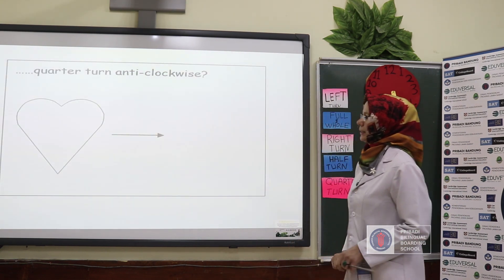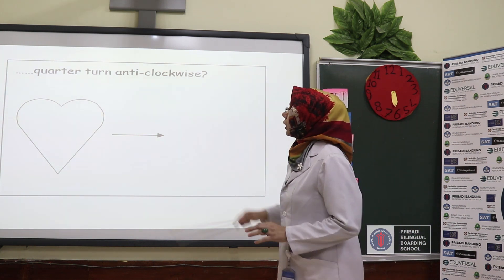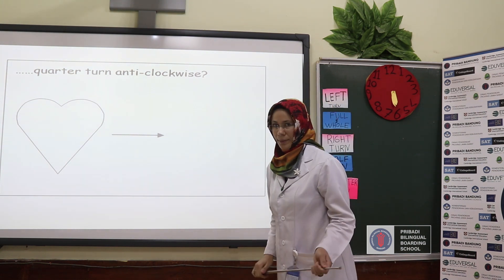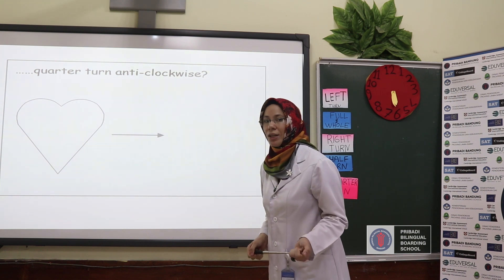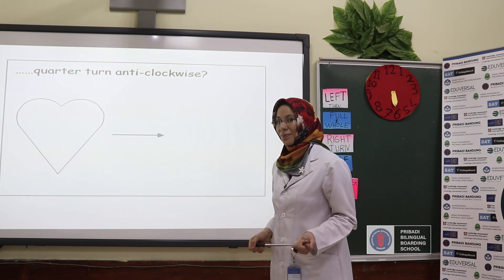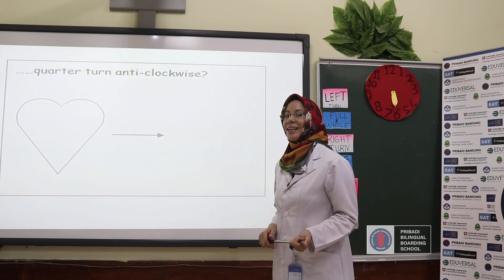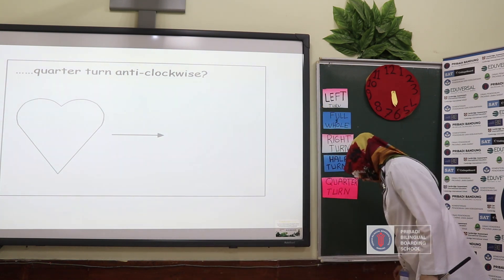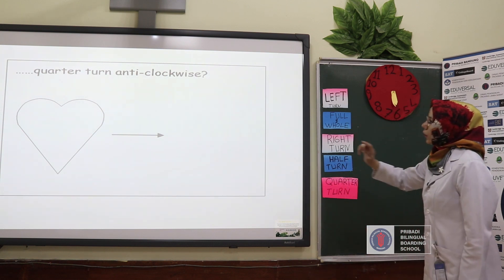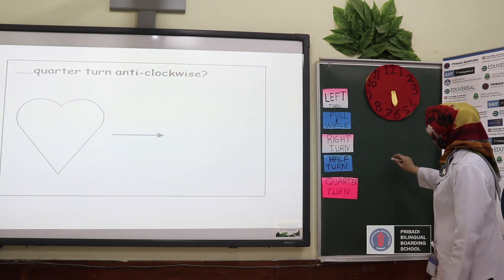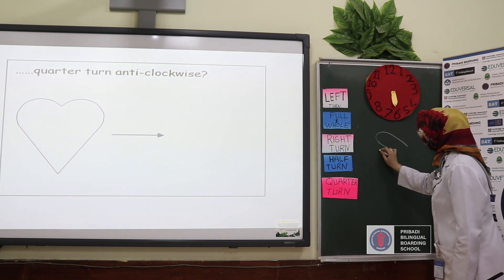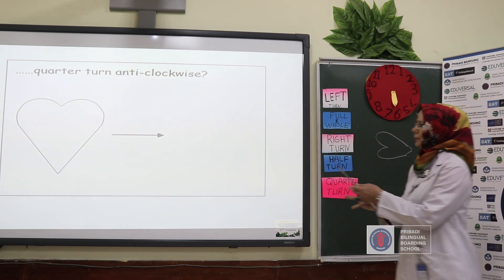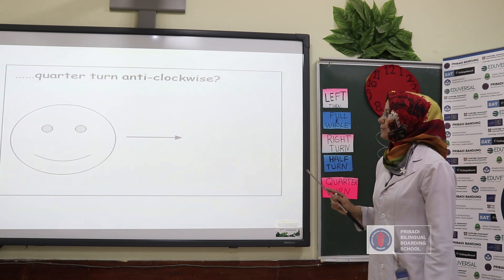Now let's see some examples. Open your notebook and draw the answer: quarter turn anti-clockwise. I'm going to give you three seconds. I'm sure you found the answer, so I will draw on the board. Quarter turn anti-clockwise — it's going to be like this. You will turn to the left side.